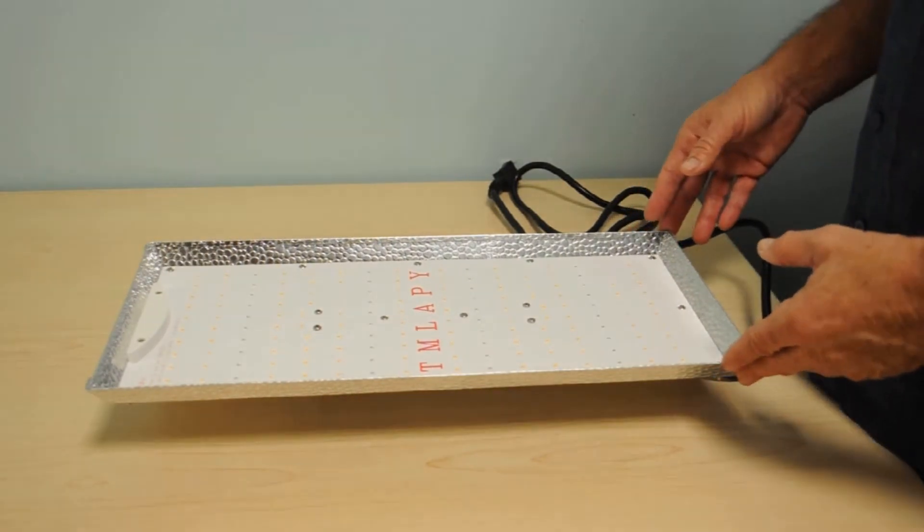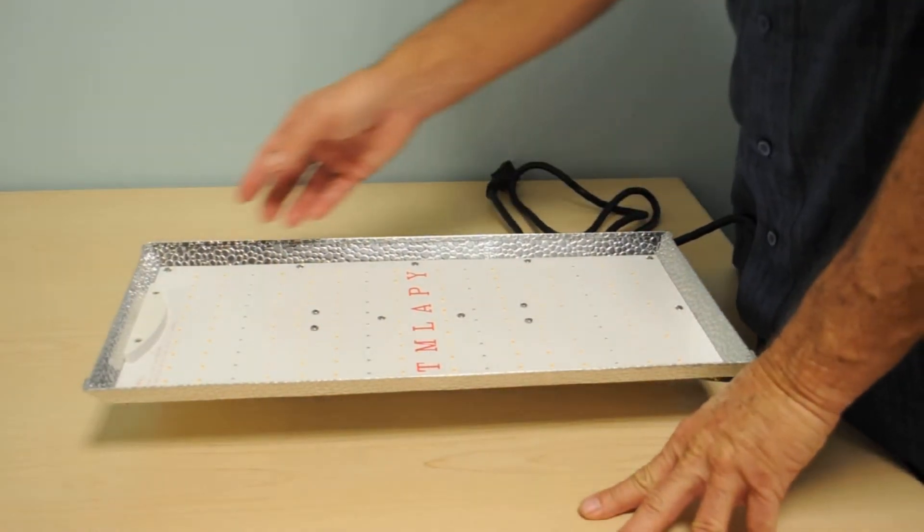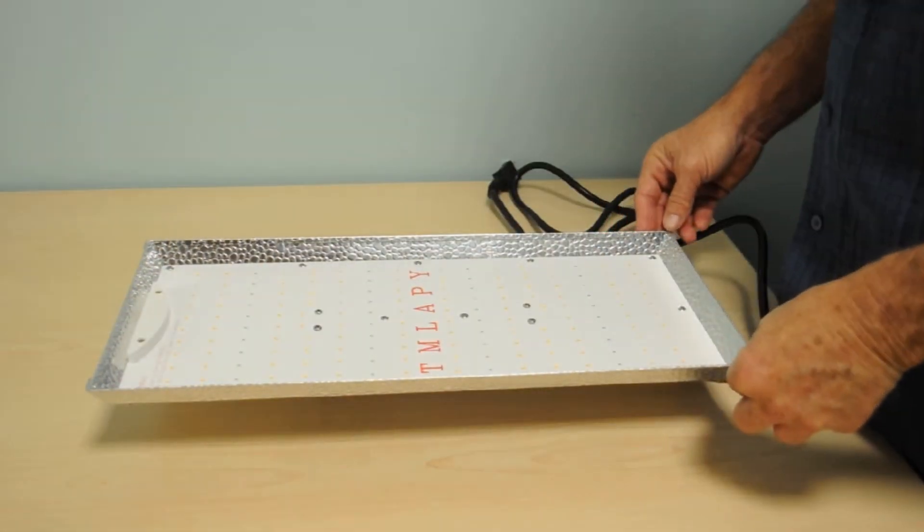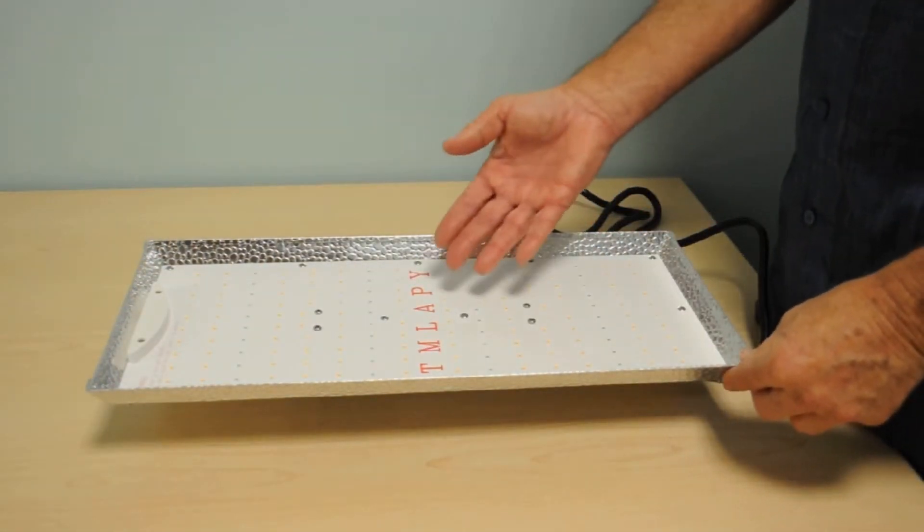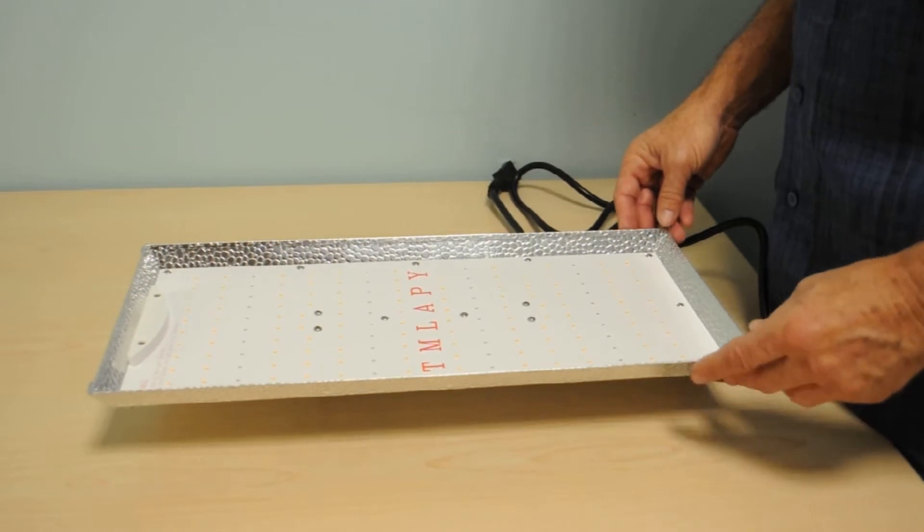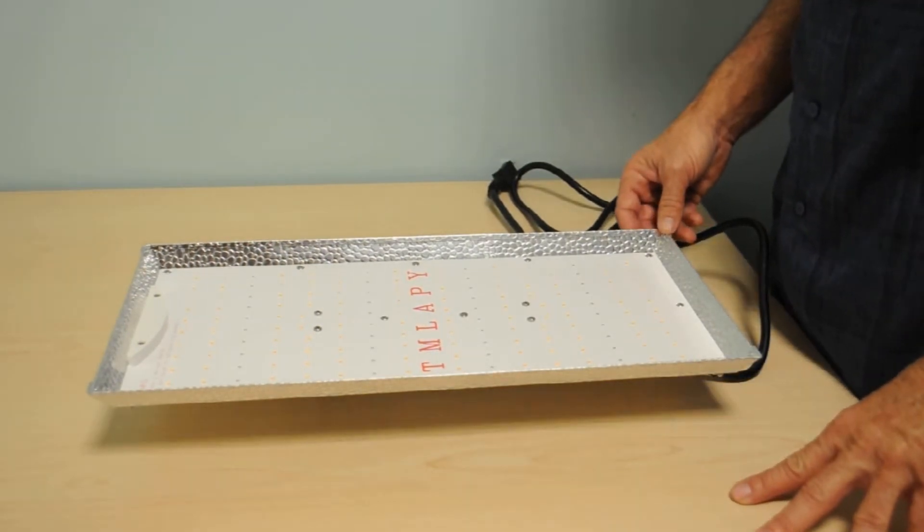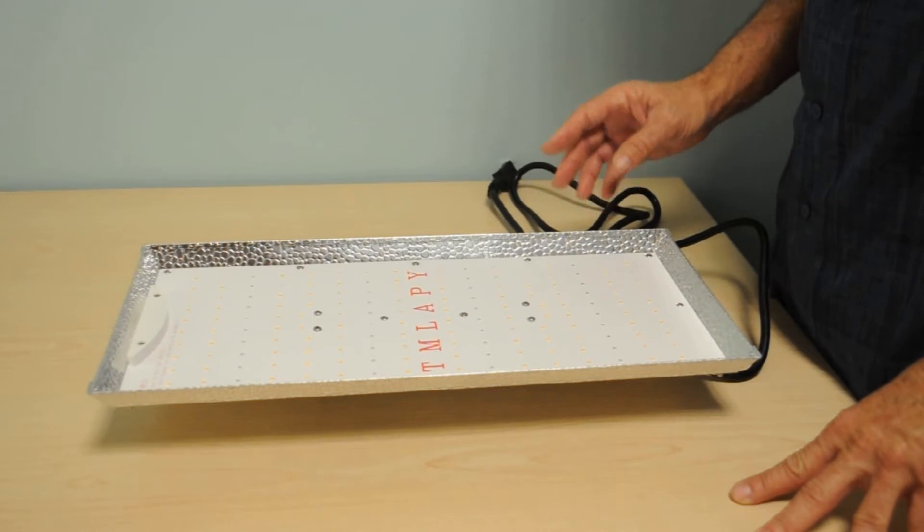Brand spanking new right out of the box, the light uses quantum board technology. It has a seven and a half by seventeen and a quarter inch quantum board with 160 LEDs. According to the specification sheet, it uses the Samsung LM301B LEDs, which are very popular high quality LEDs.